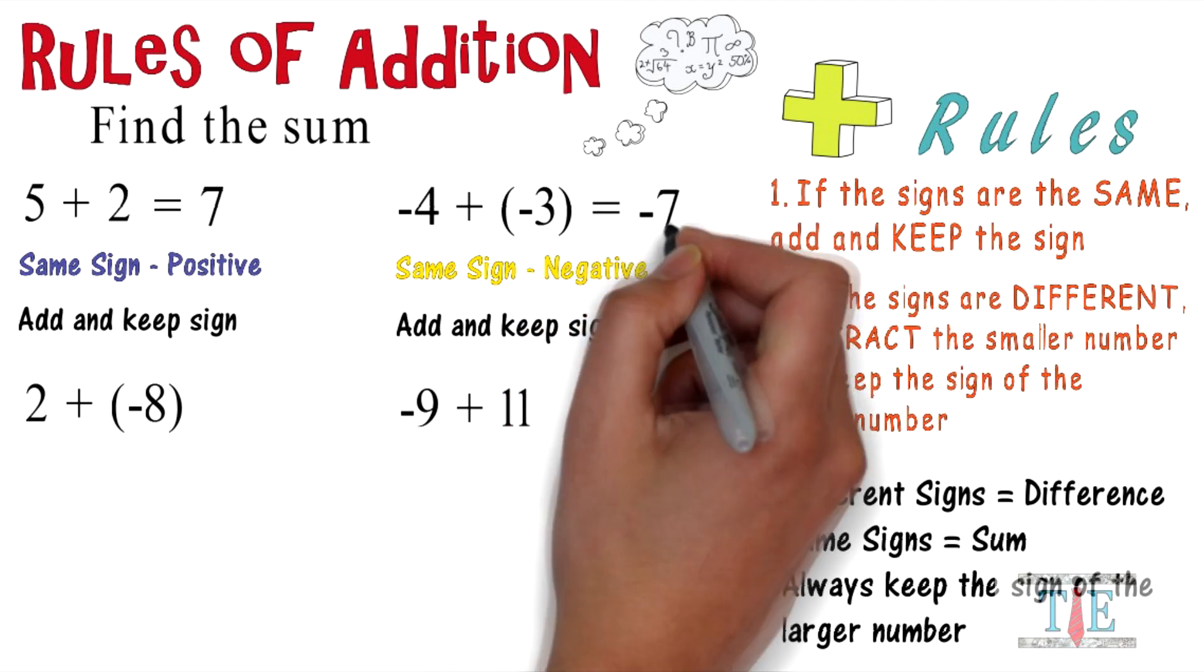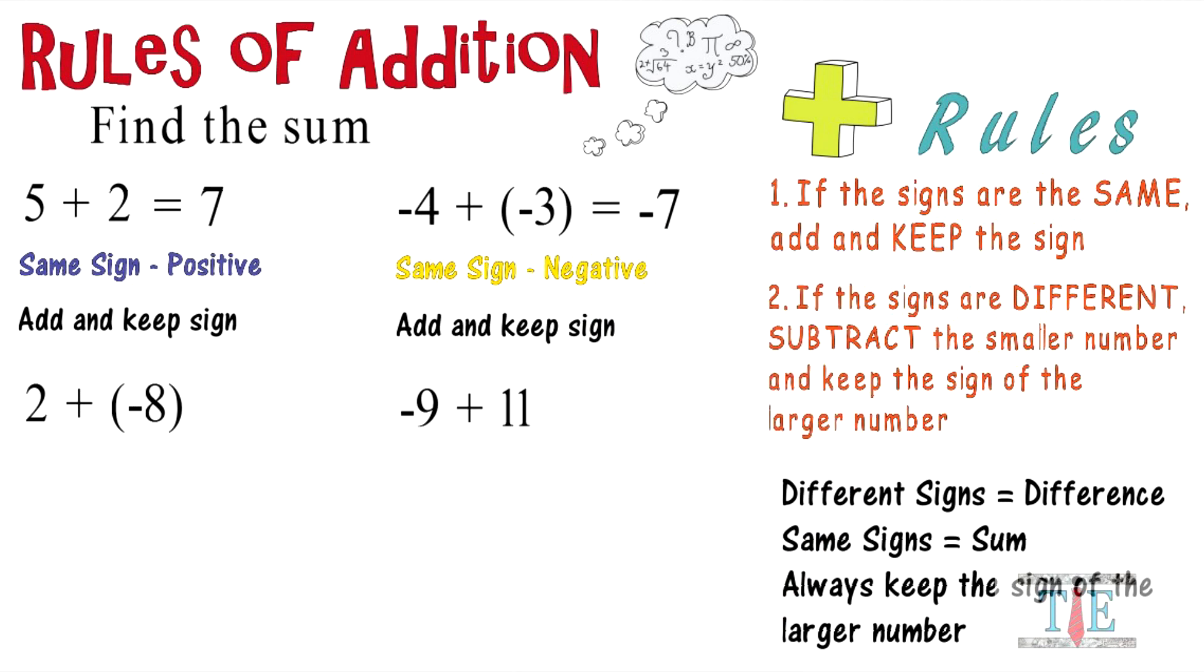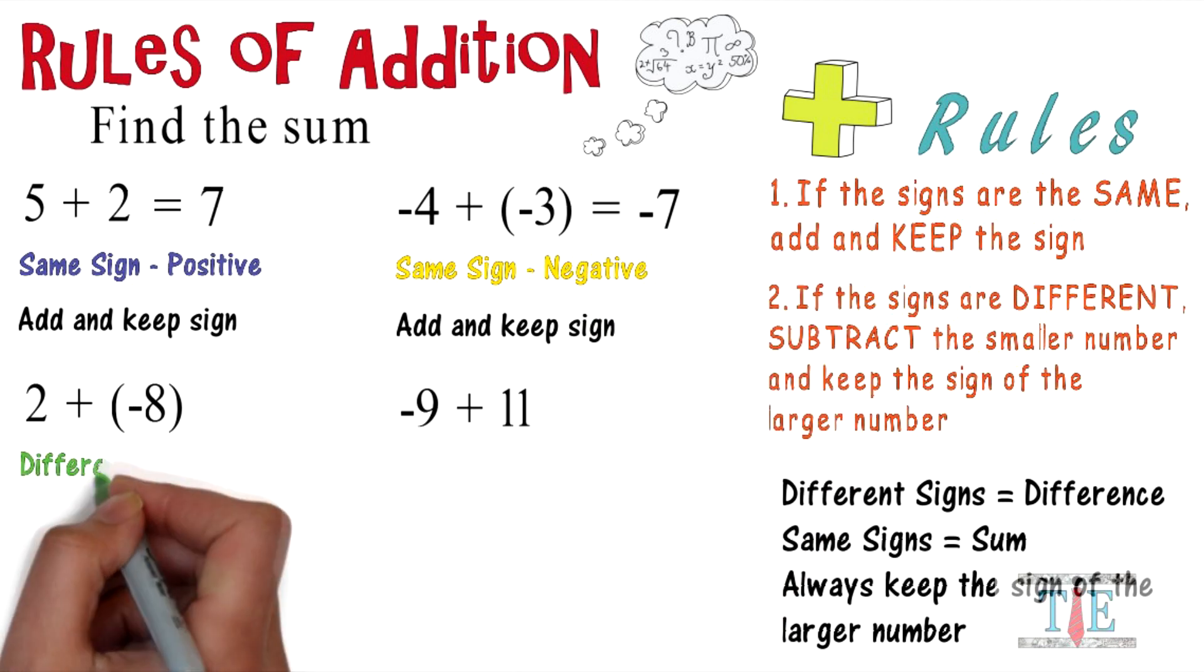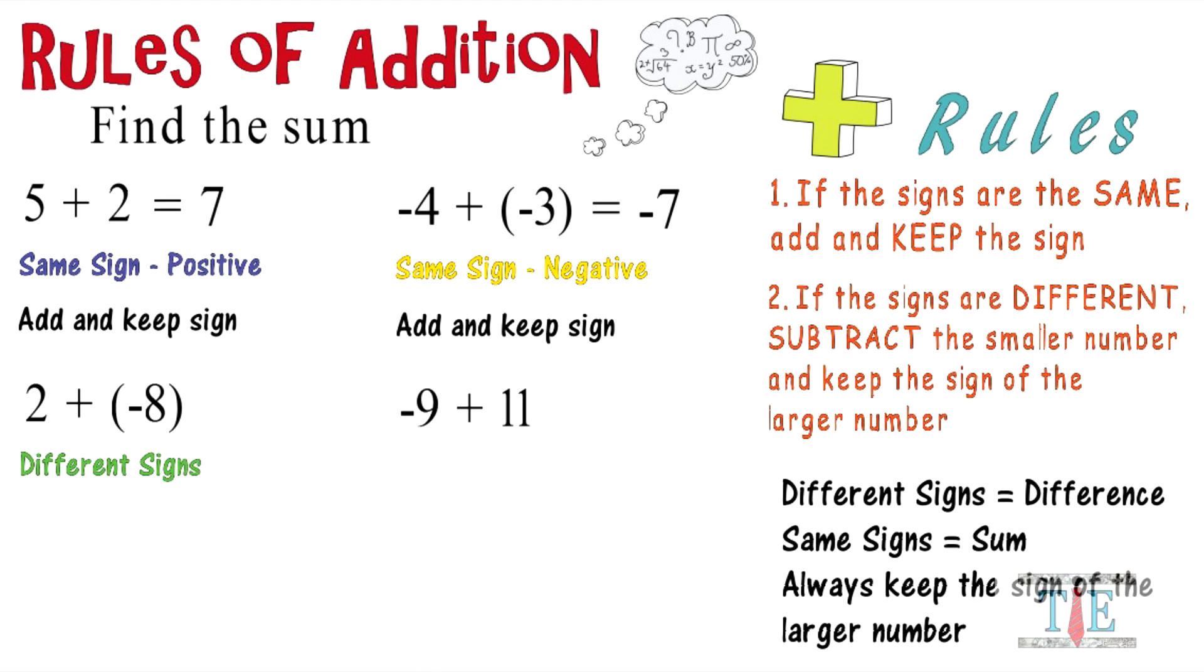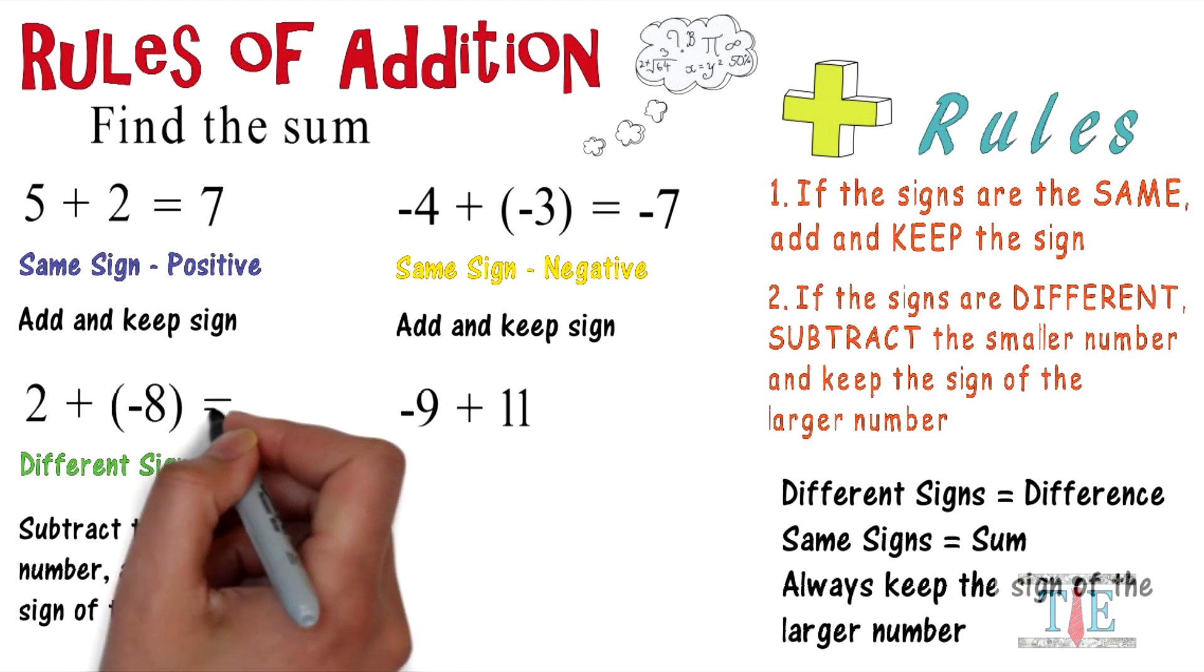Next up, different signs: we've got a positive two and a negative eight. So we subtract the smaller number and keep the sign of the larger number. Eight minus two is six, and we'll keep the sign of the larger number, which is a negative.